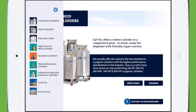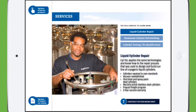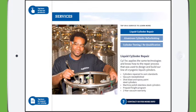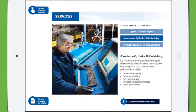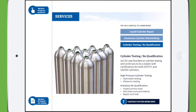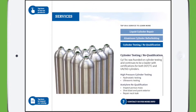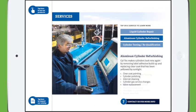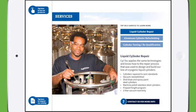Another feature allowed us to go in and add services. Services are normally lots of information, but in this case we were able to hide it behind three different tabs to make it a little interactive. Here we have liquid cylinder repair. We can click on the next one for aluminum cylinder refurbishing and then on to cylinder testing. This allowed us to hide a lot of information, allow the viewer to choose what they wanted to see, and then move on to the next tab.